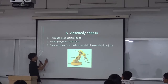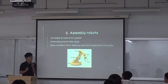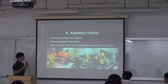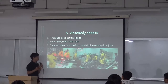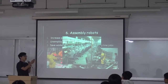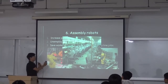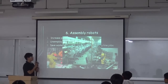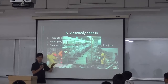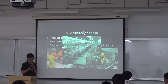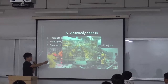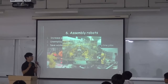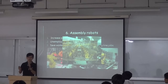But it can save workers from tiredness and do all assembly line jobs. The next feature is how the assembly robot works. This is the traditional production line formed with humans, but nowadays it will turn to be like this one — we will use assembly robots to handle the production line.